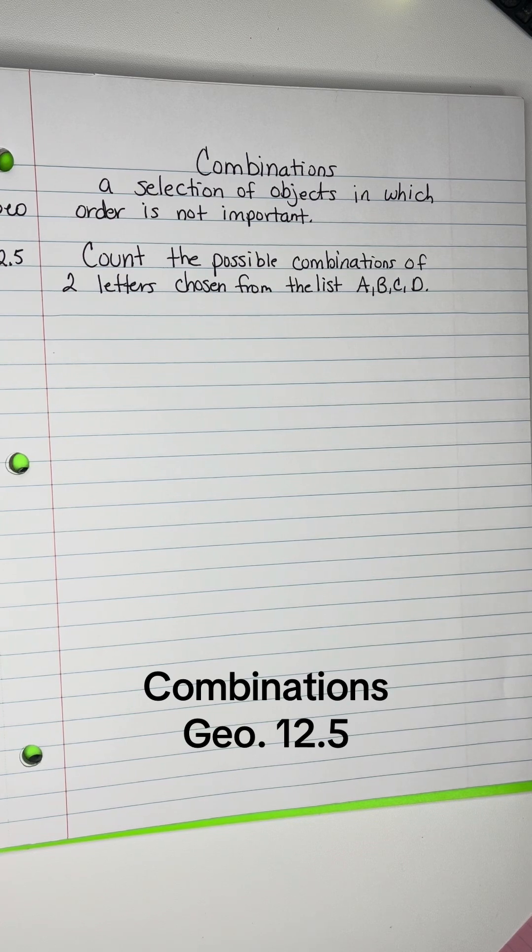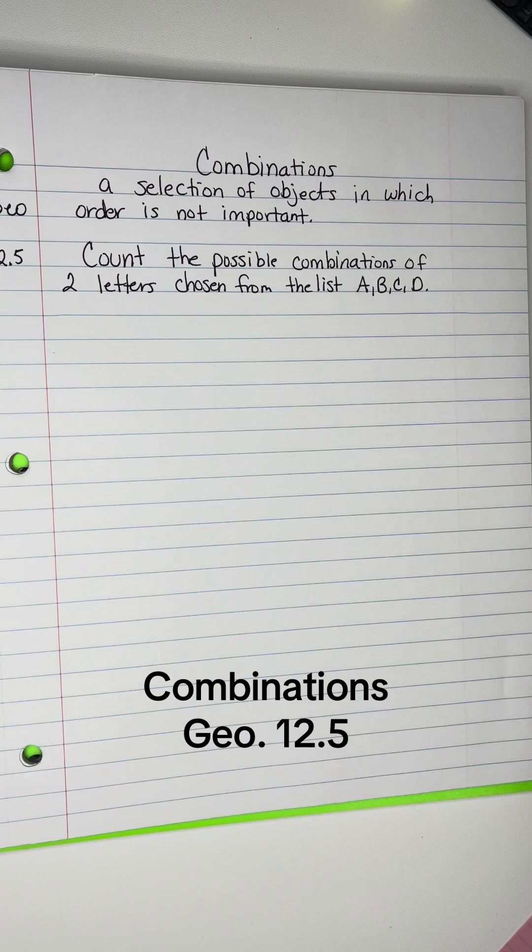For instance, if you're in a drawing for three identical prizes, let's say they're iPhones, it would not matter if you won first, second, or third, because everybody's getting the same gift. So order is not important in that instance.